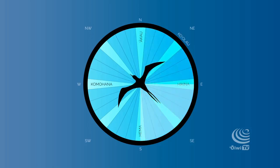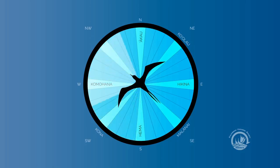Then if you go from east to south, that's going to be Malanai. And then south to west, that's going to be Kona. And then from west back to north, 360 degrees, that's going to be Ho'olua.